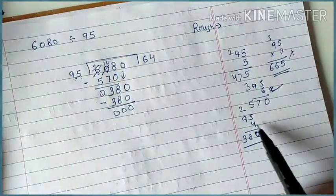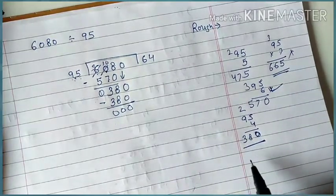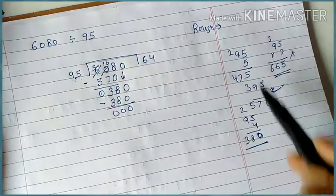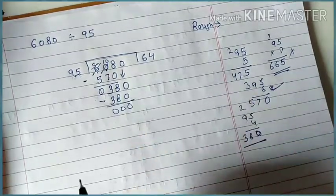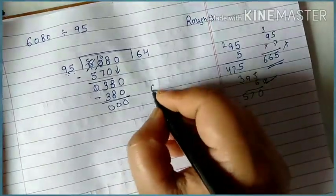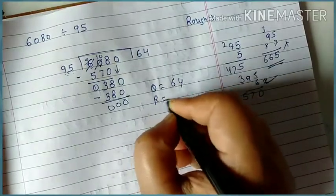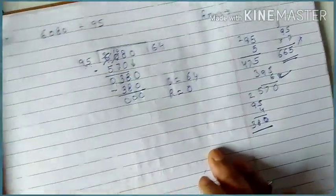So what do you do in rough page? You multiply it and see how much the number will go. So what is the question? The quotient is 64, the remainder is 0. Understand children?